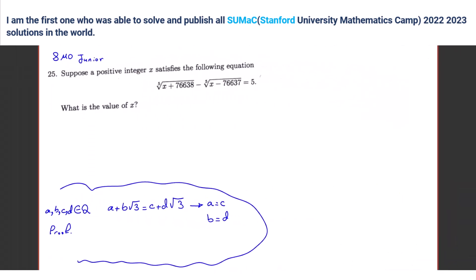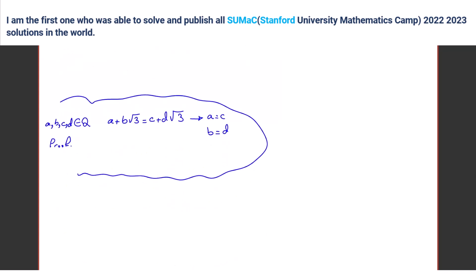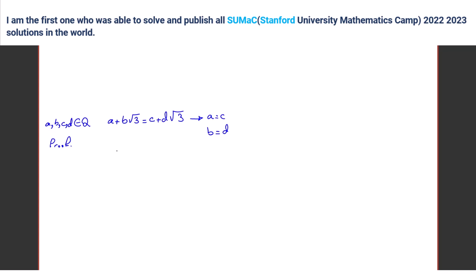I think I solved it. Can you explain? So let's say a is not equal to c and b is not equal to d. Then a minus c is equal to d squared minus b squared. Yes, and then the right side would be square root of three times d minus b.